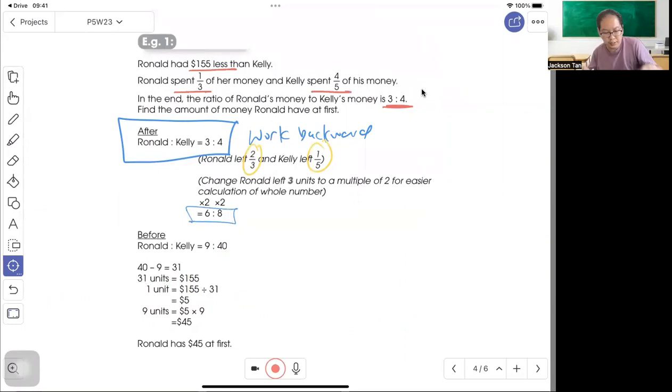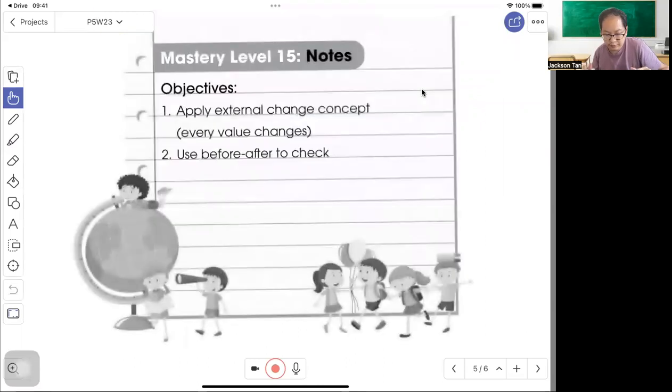So Ronald has $45 at first. Mastery level 15: apply external change concept and you'll be fine.